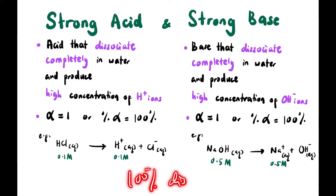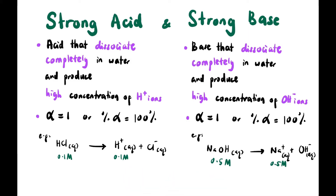This means the concentration of H⁺ equals the concentration of the acid. Similarly for a strong base: if NaOH is 0.5 M, then the concentration of Na⁺ and OH⁻ are both 0.5 M. The assumption is 100% dissociation, so the acid concentration directly gives the H⁺ concentration and the base concentration directly gives the OH⁻ concentration.